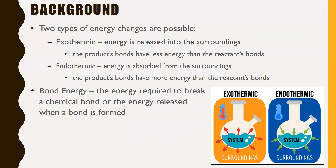Two types of energy changes are possible. In an exothermic reaction, energy is released into the surroundings — the products' bonds have less energy than the reactants' bonds, so energy gets released into the outside environment. In an endothermic reaction, energy is absorbed from the surroundings, so the products' bonds end up having more energy. Exothermic reactions release heat; endothermic reactions absorb heat.